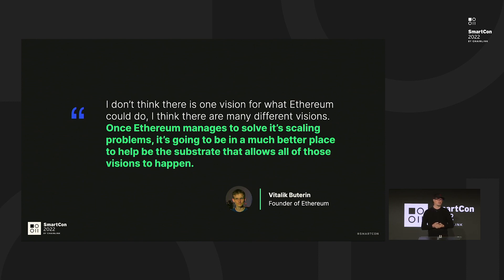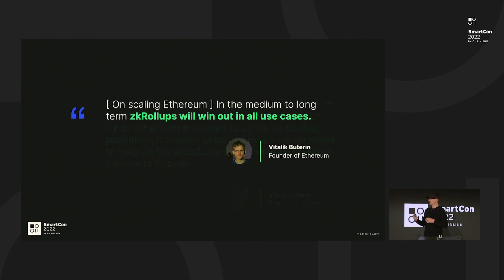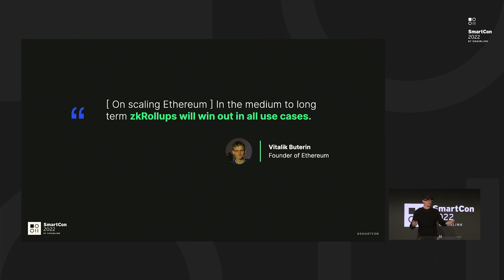Vitalik was on Bankless earlier this week and gave a really interesting quote: 'I don't think there's one vision for Ethereum, I think there's many.' It's scaling that unlocks all of those different visions and versions of Ethereum. And Vitalik has also said that ZK roll-ups will win and be the endgame for scaling Ethereum — that's when we can replace the lock icon with the Ethereum icon. A lot of folks ask: why are ZK roll-ups really the endgame? It starts with Layer 2, but the real place it exists is in Layer 3.